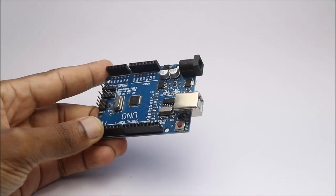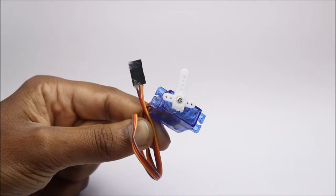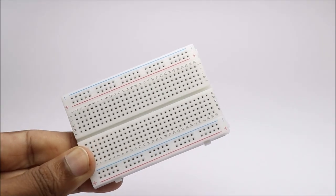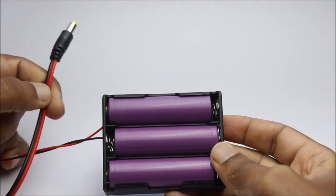To build this project you need Arduino Uno, soil moisture sensor, micro servo, small breadboard, OLED module, lithium-ion battery, red LED, and a piece of cardboard.